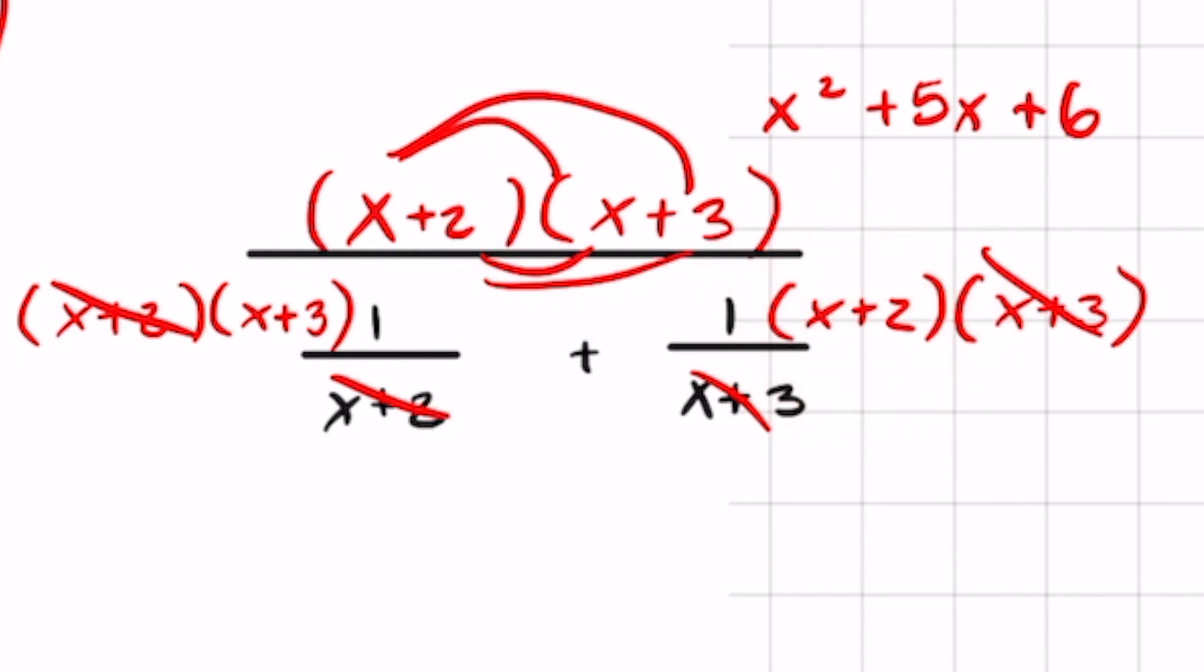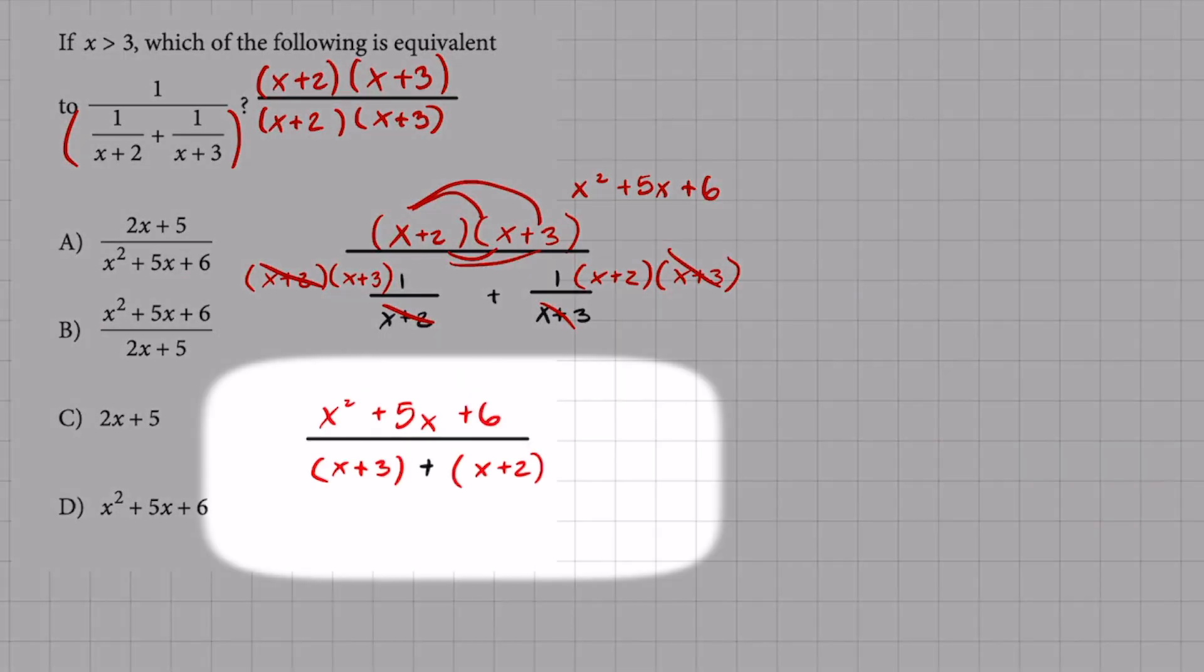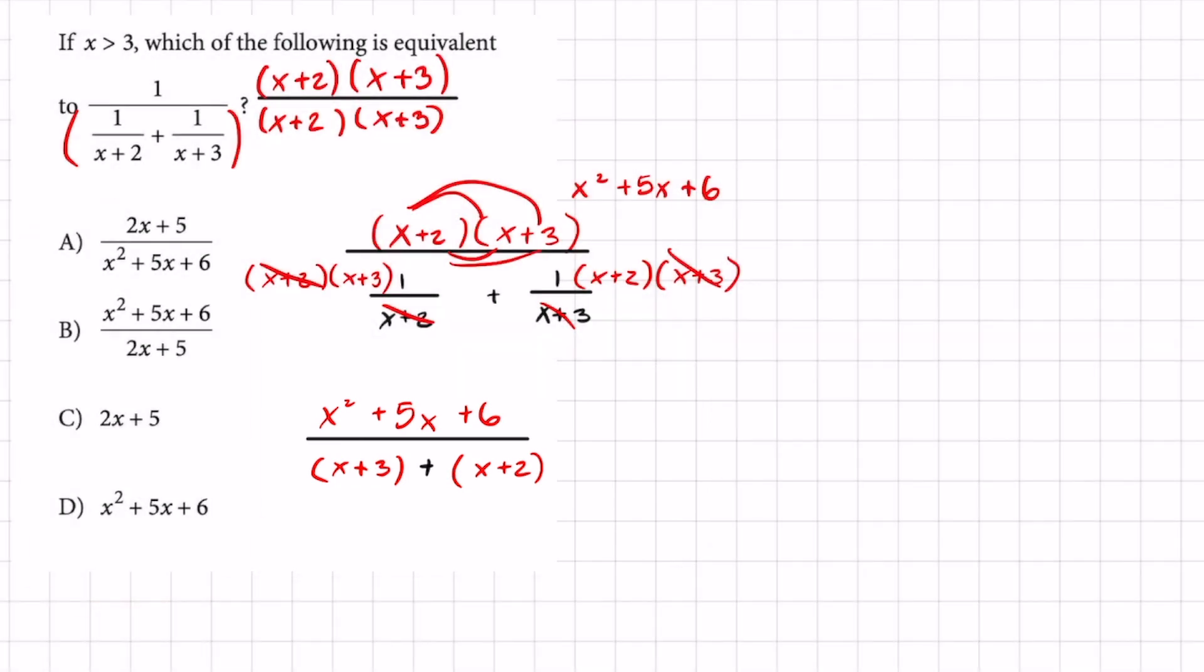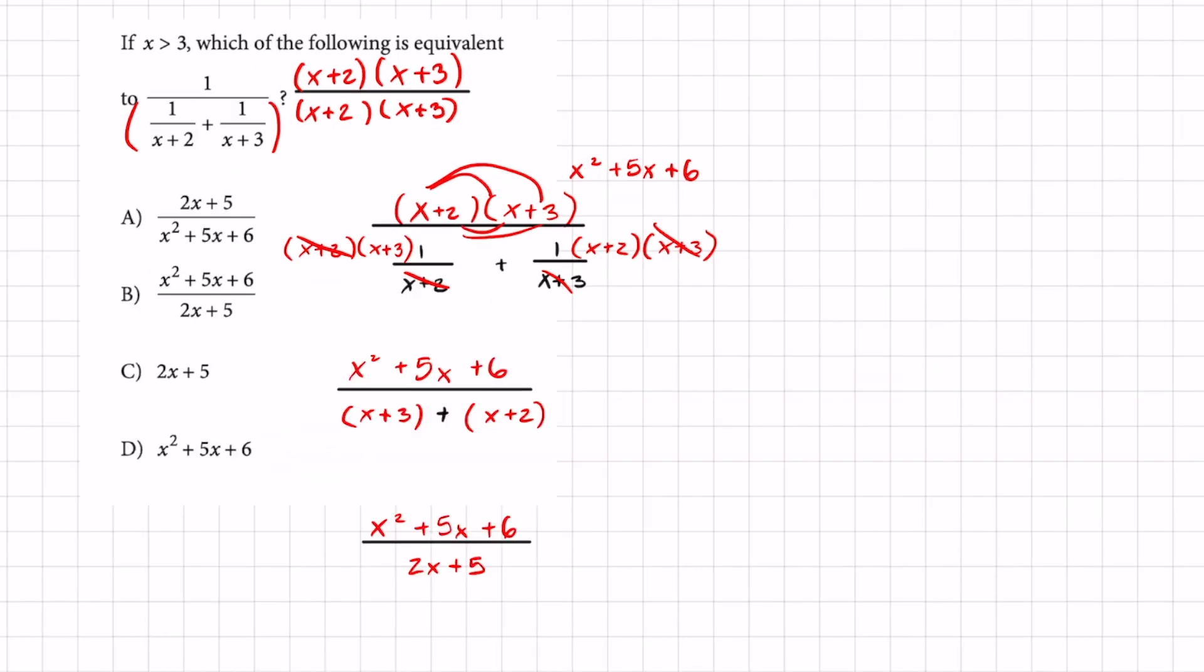I'm going to end up with this expression right here. And at this point you can kind of tell what the answer is but we might as well finish this in the legit way. The last part, all we got to do is combine like terms right here. You're going to end up with this expression which is letter choice B. I hope this was a good review for you.